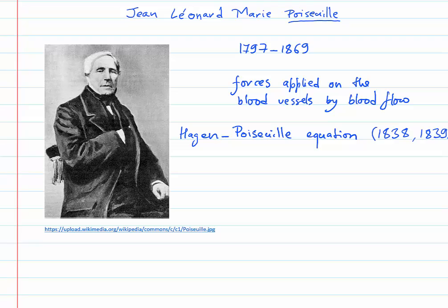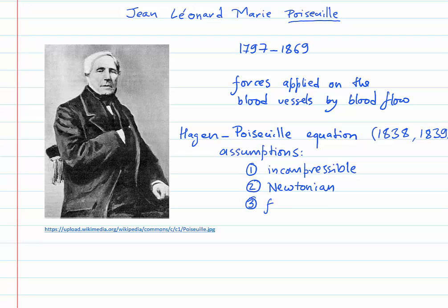There are certain assumptions made by this equation. First, the fluid is incompressible, which is approximately true. Second, the flow is Newtonian, which is usually not true. Third, the flow is laminar — a smooth flow in streamlines — as opposed to turbulent flow, where the fluid mixes in disorderly patterns. These assumptions were necessary to derive a simple equation. It's useful because you get an approximate value, and then you can apply corrections for the blood being non-Newtonian or non-laminar. It's useful as a first approximation.